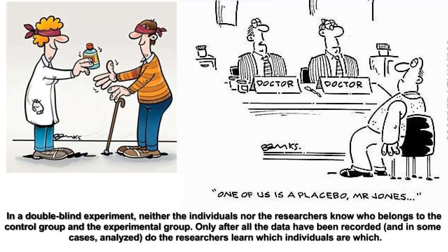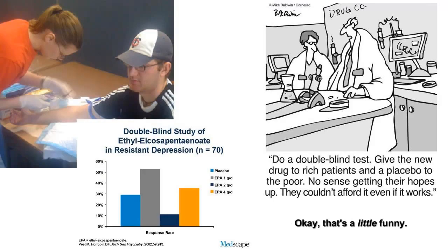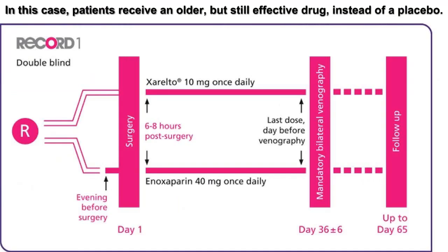It is only after the results have been reported that we allow the researchers to reveal which group the result is from. In this arrangement, there is no way for confirmation bias to be applied. The large population and randomized selection are also important elements to avoid experimental bias. There are cases where it is not feasible, or sometimes not even ethical, to design human experiments in this way, but it remains the highest level of evidentiary support.